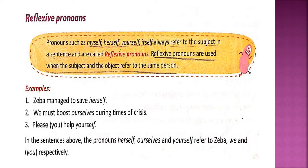For example: she believes in herself. There are nine English reflexive pronouns: myself, yourself, himself, herself, oneself, itself, and ourselves.